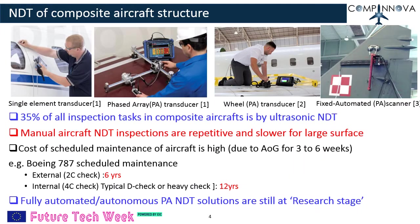NDT of composite aircraft structure: aircraft maintenance involves different maintenance activities. Ultrasonic non-destructive testing is one of the important maintenance activities. Single element and multi-element ultrasonic transducers, also called phased array transducers, are used for detection and sizing of damages on aircraft. Furthermore, about 35 percent of all NDT inspection tasks in composite aircraft is by ultrasonic NDT. Manual aircraft NDT inspections are repetitive and slower for large surfaces.